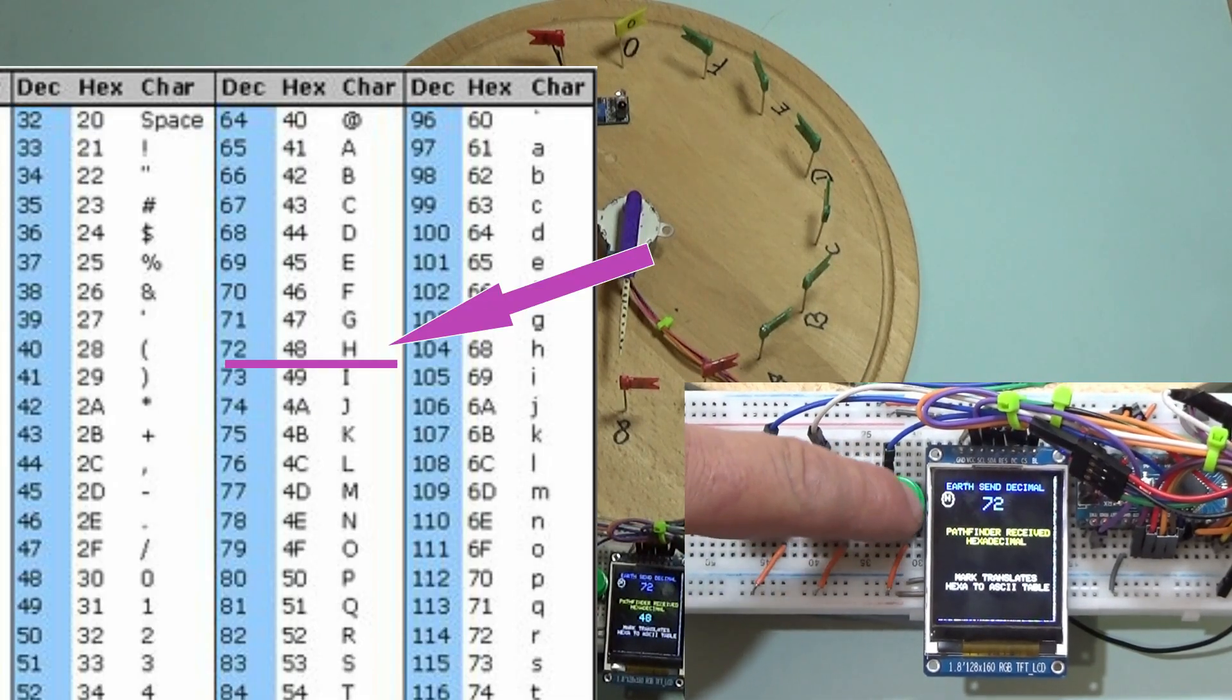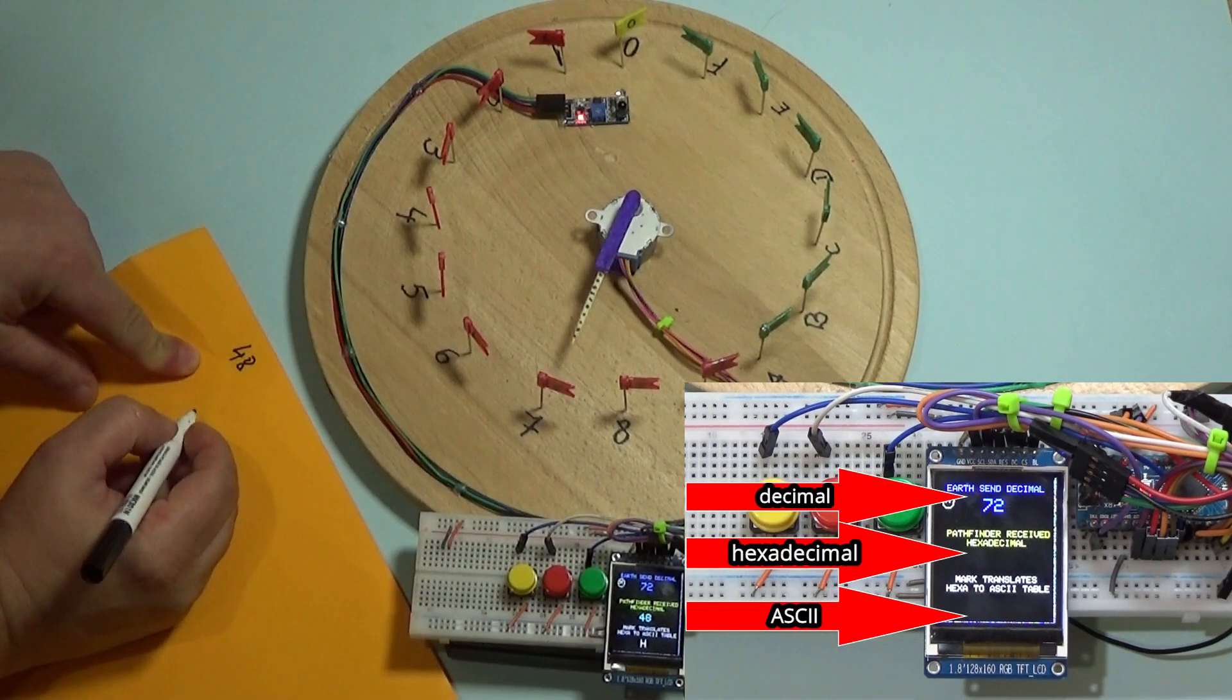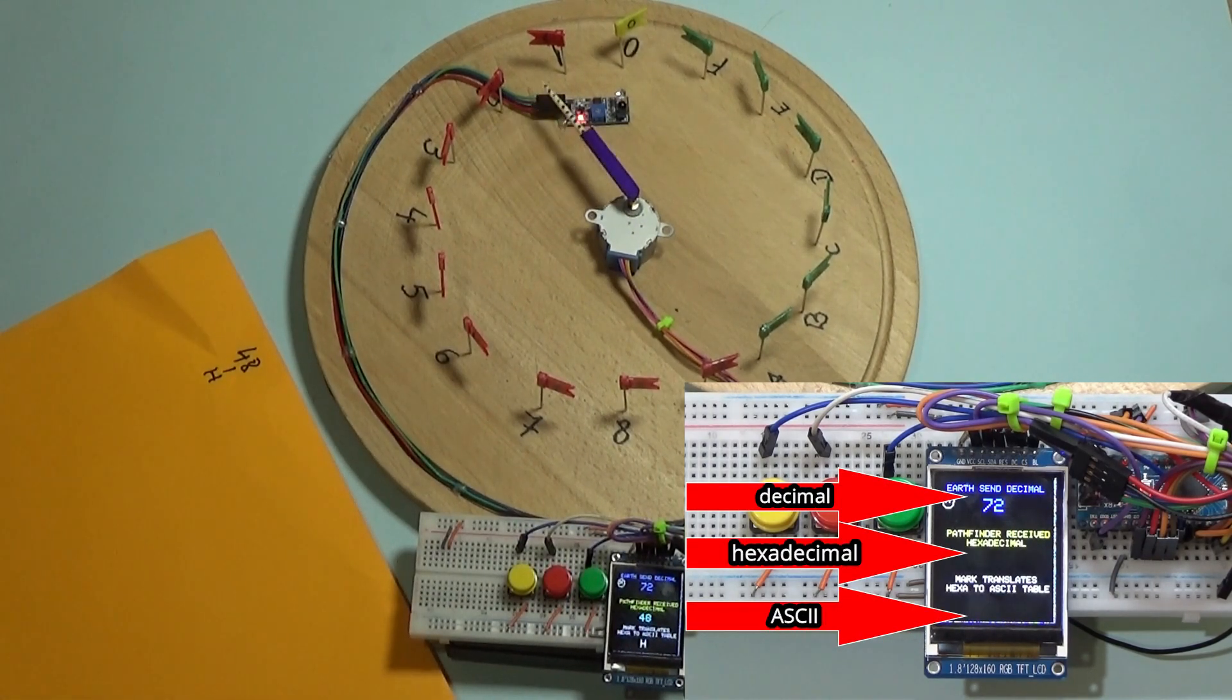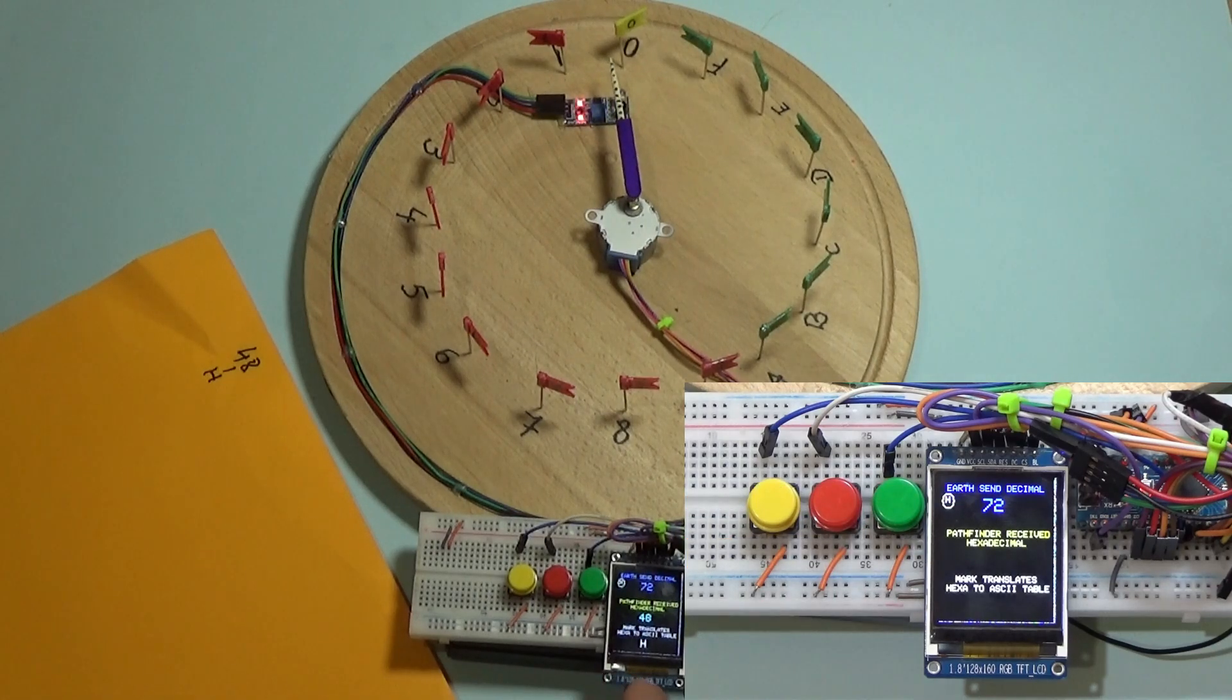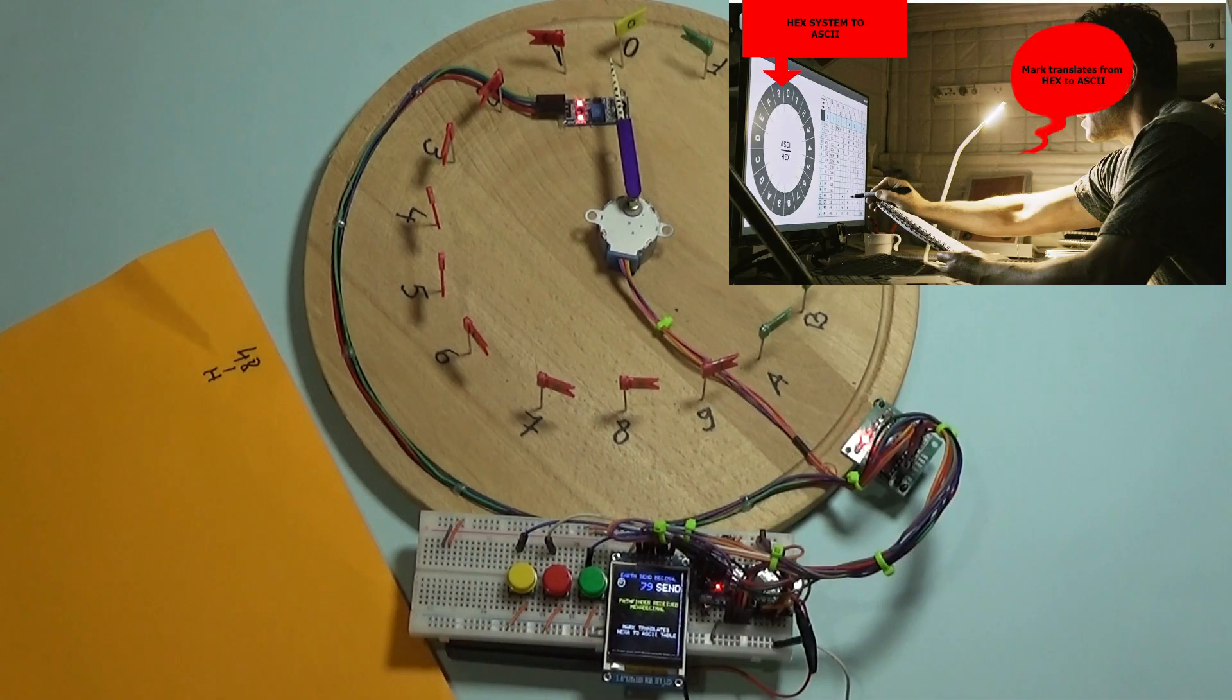Earth sends a message to Pathfinder in decimal system. Pathfinder transforms the decimal message into hexadecimal. Mark reads the two characteristics of each letter in the hexadecimal message and compares it with ASCII table.